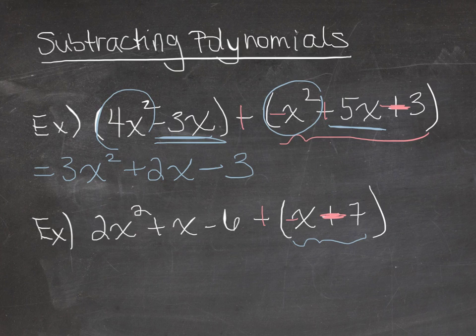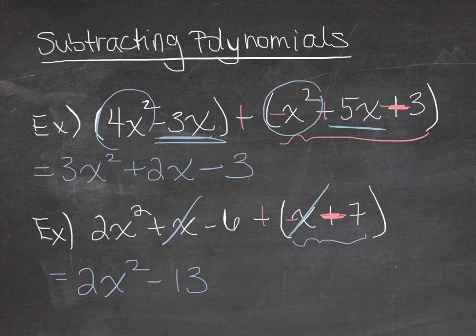So now I can bring together the polynomials. I have 2x squared, and I don't have any x squared in the second polynomial, so that will stay. Then I have a positive x and a negative x. So those actually just cancel each other out. And then I have negative 6 plus negative 7, so I get negative 13.